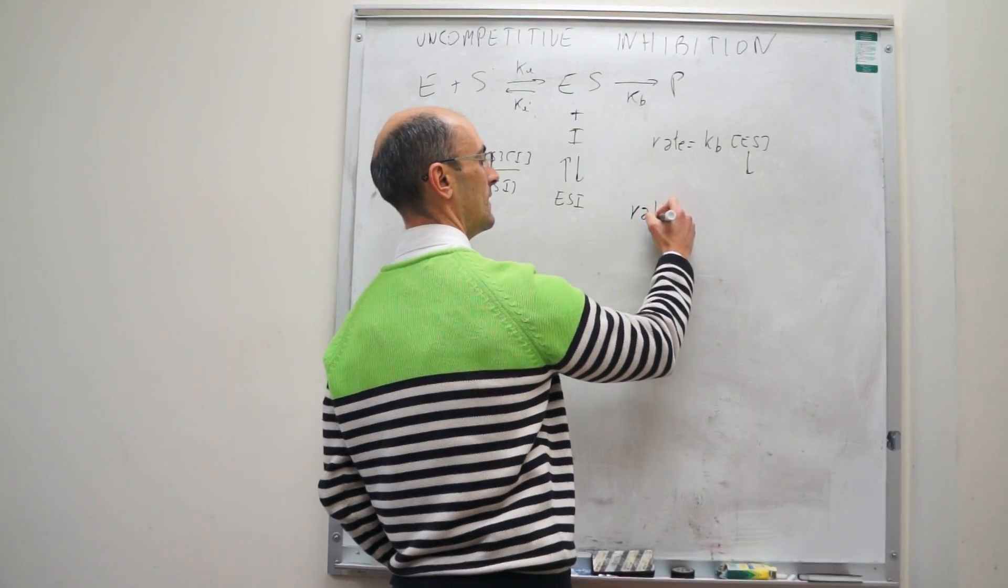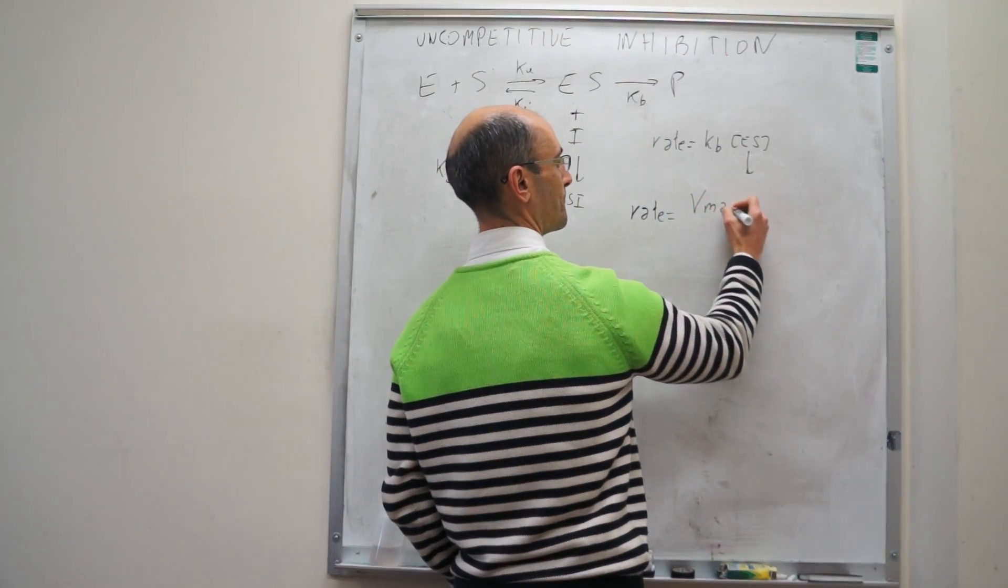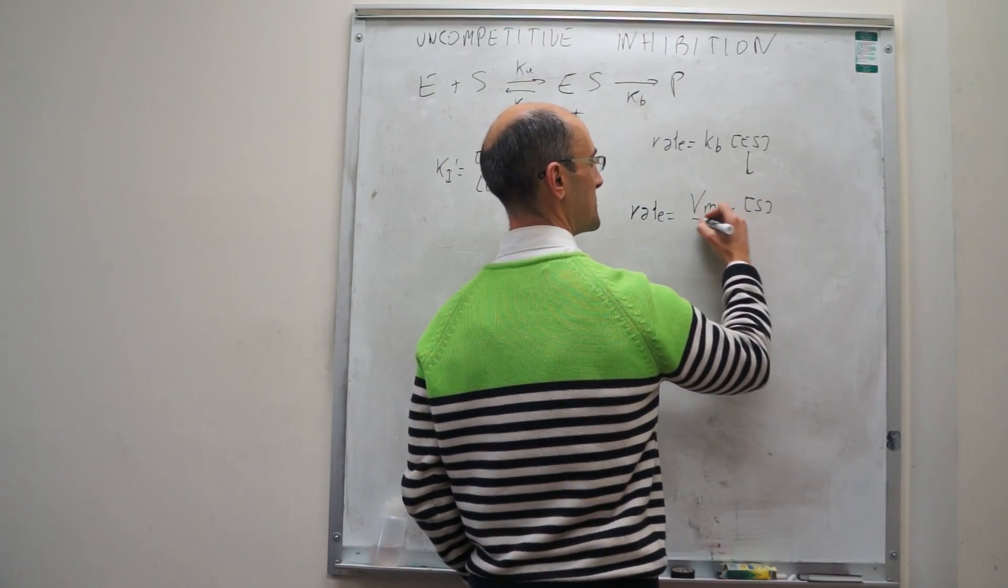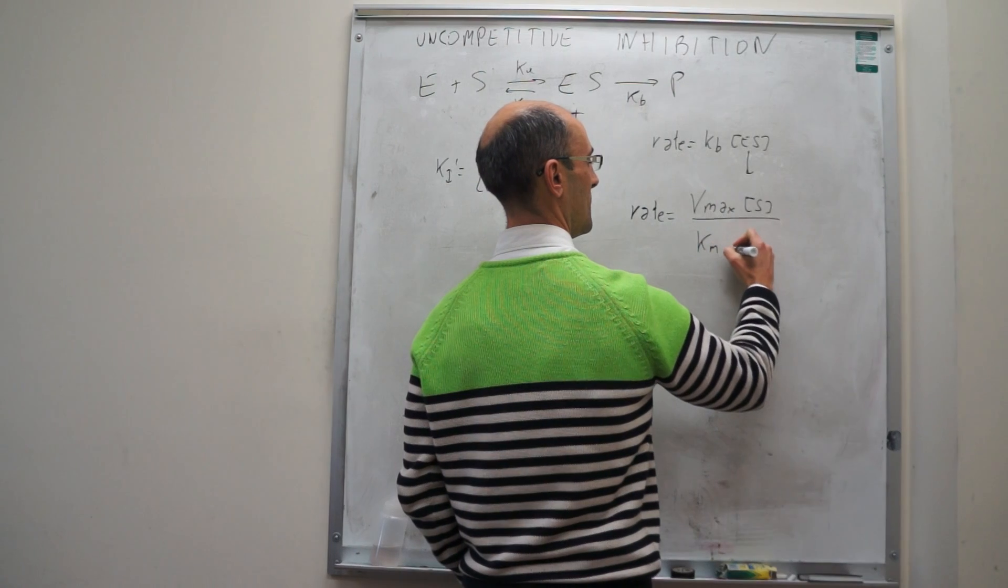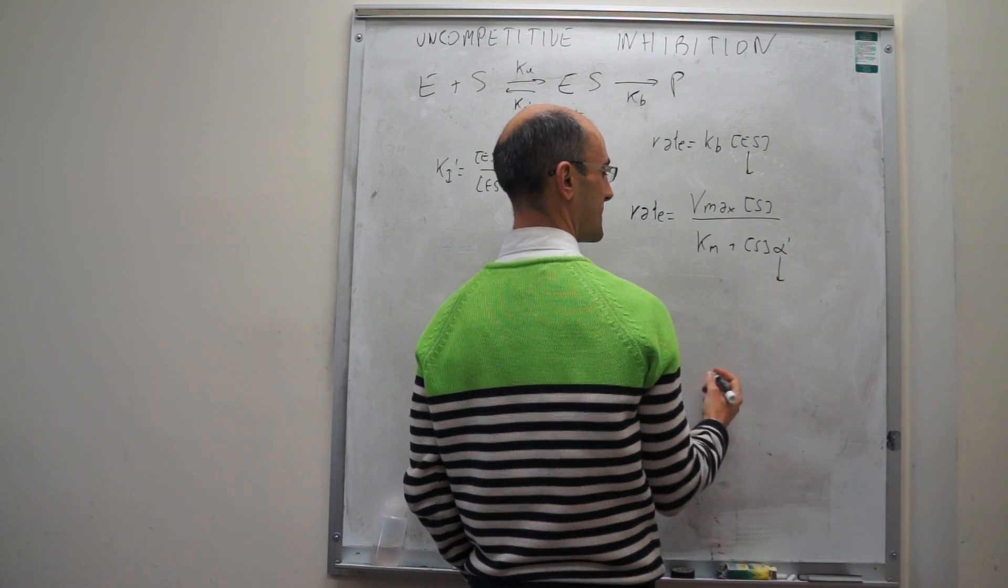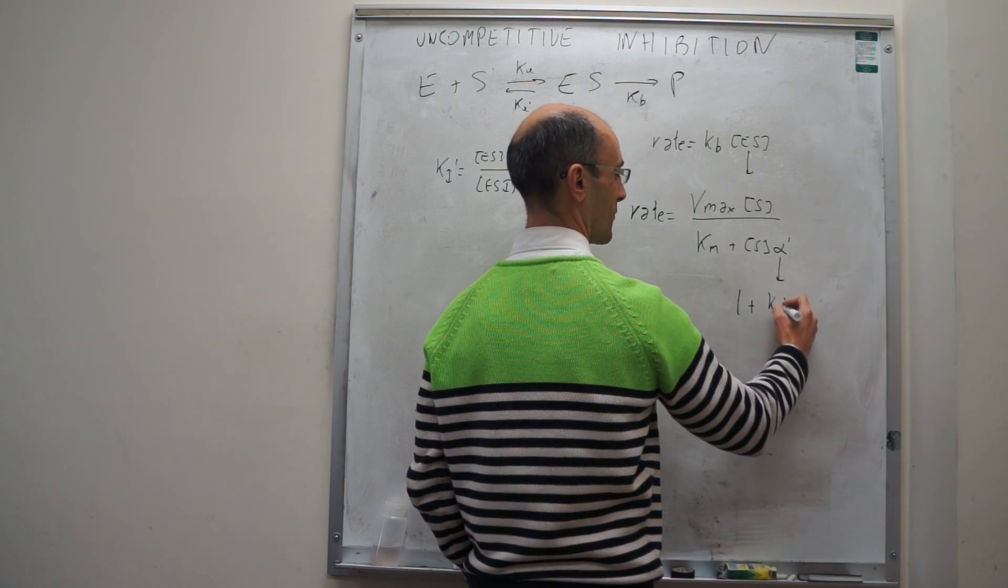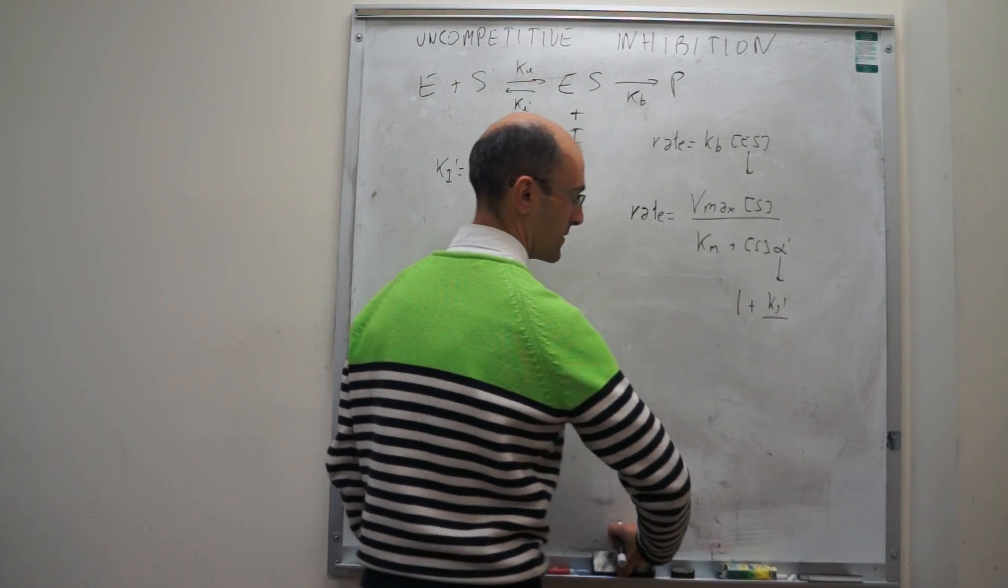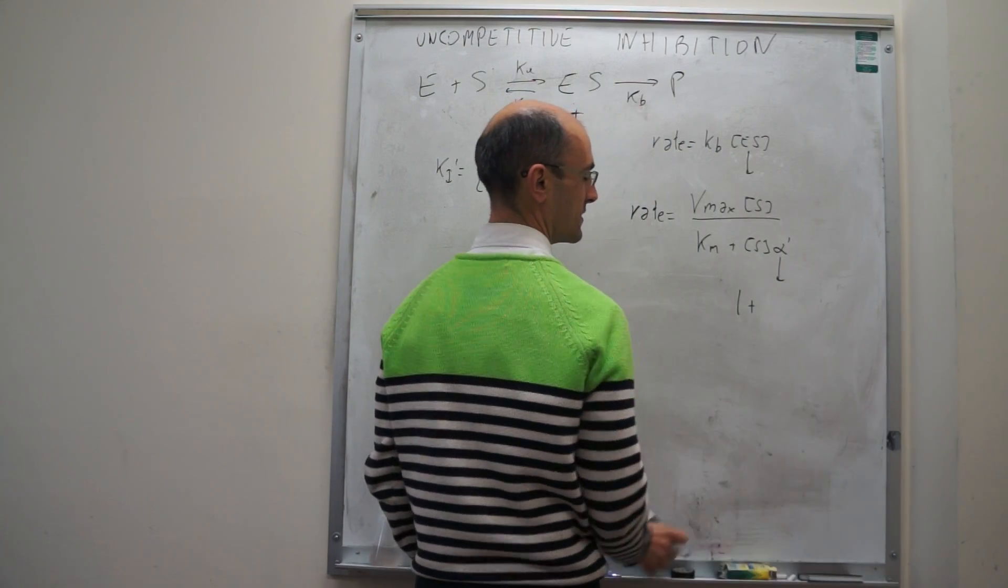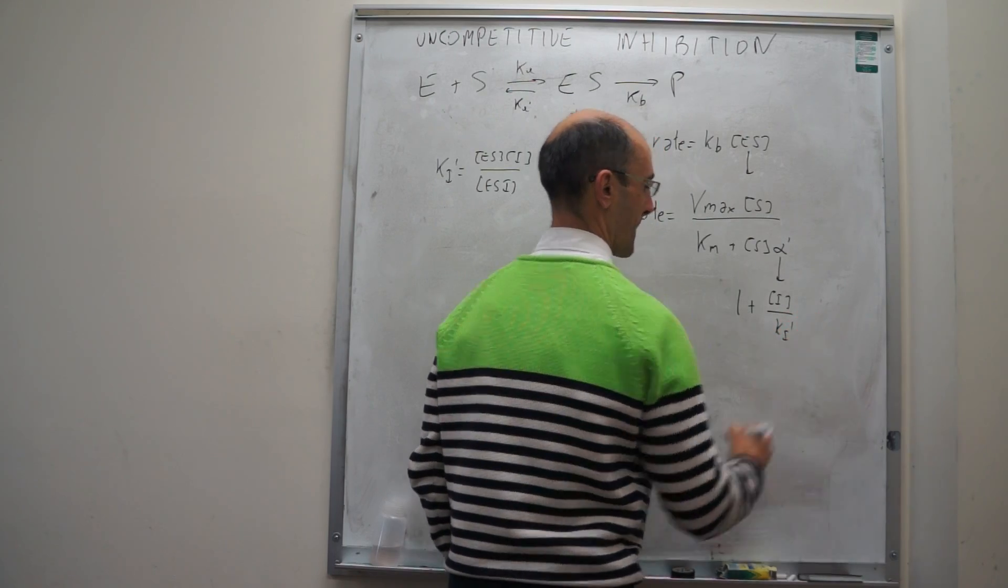After you do all that, the rate is just going to be equal to Vmax times concentration of substrate over KM plus concentration of S over alpha prime, where this alpha prime is just going to be equal to 1 plus concentration of inhibitor over KI prime.